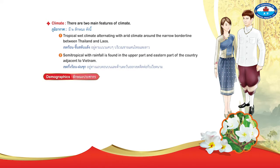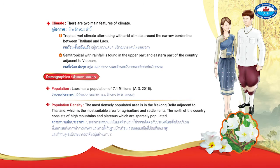Demographics — Population: Laos has a population of 6,835,345 as of AD 2009. Population density: The densely populated area is the Mekong Delta adjacent to Thailand, which is the most suitable area for agriculture and settlements. The north of the country consists of high mountains and plateau, which are sparsely populated areas.